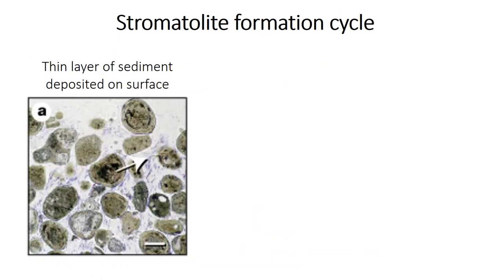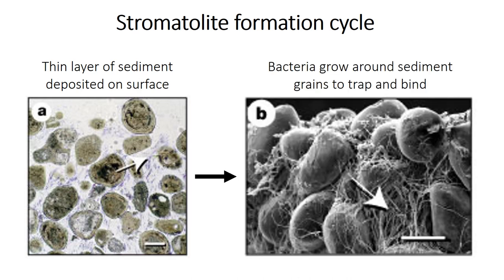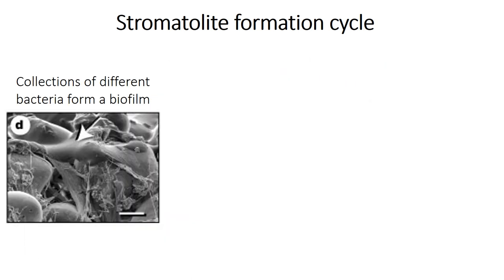The layered structure in a stromatolite forms because of a consistent cycle of events. First, there's a thin layer of sediment, or sand grains — like the round things in this photo — that's deposited on top of the seafloor. Next, the single-celled bacteria living there, the little stringy filament things in this photo, will grow around the sediment grains to trap them in place. But there isn't just one type of bacteria present; instead, there's a small community of many different types, which form something called a biofilm.